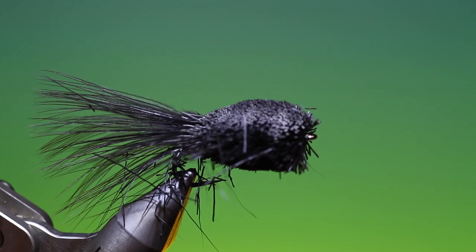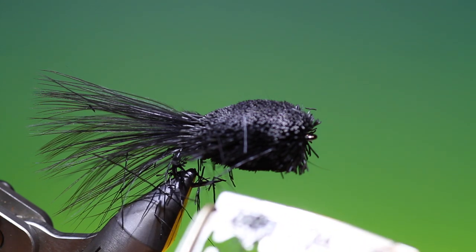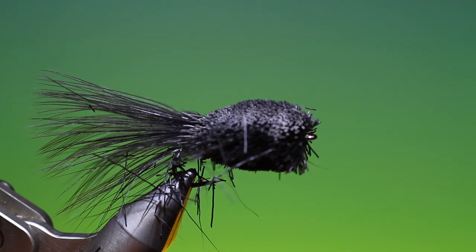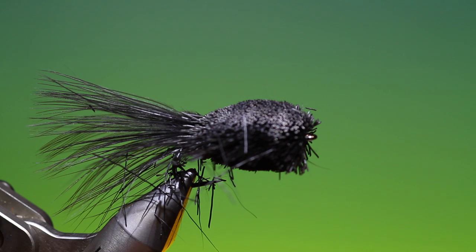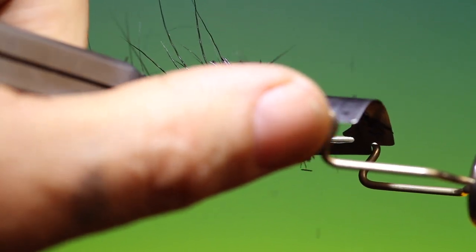I have to swap my blade around. Cutting deer hair, it does blunt the blades very quickly. Even when you're hunting and you're skinning a deer, your knife edge will blunt very quickly.